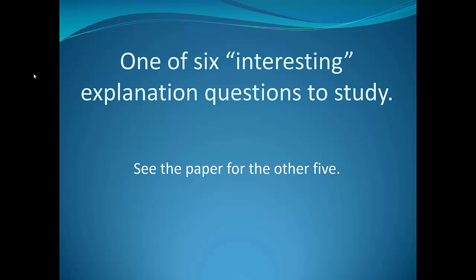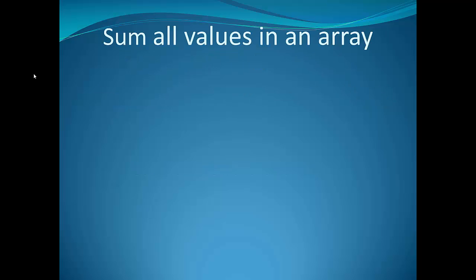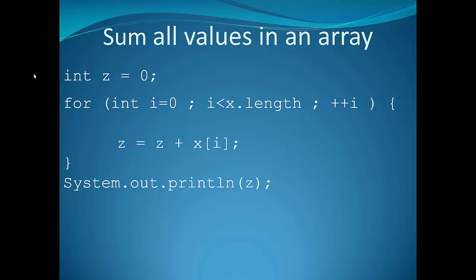Finally, the paper contains six explanation questions which I'd be very curious to see eye scanning studies for. I'm hoping that one of you will do such a study. I don't have time to present all of them, so let me present just one. Here is a piece of code: sum all values in an array. That's what the code does. We have a variable in which we'll be collecting the sum called z, because if we called it sum it would be giving the answer away. We have a for loop, and each time around the for loop we add another element of the array into the variable collecting the sum. When I gave that code to my students at the end of their first semester, 83% of them answered correctly that it was summing the values.